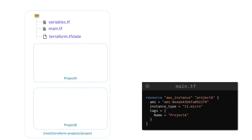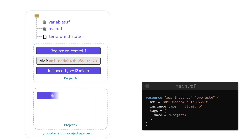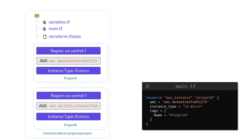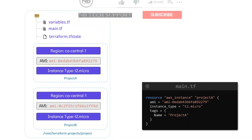Let us go over our requirements again. Without duplicating the configuration files, we want to create EC2 instances for two projects in the CA Central 1 region. Project A with the AMI ID ending with 279, instance type of T2 Micro, and the name tag of Project A. And another instance for Project B with the AMI ID ending with F4D, the same instance type, but with the name tag of Project B.